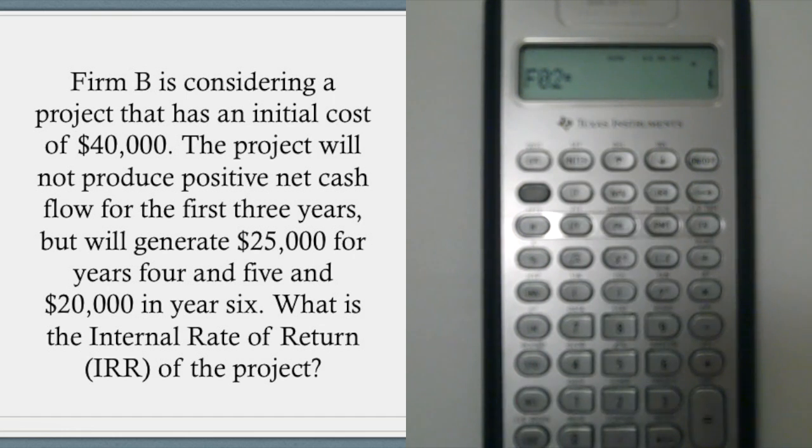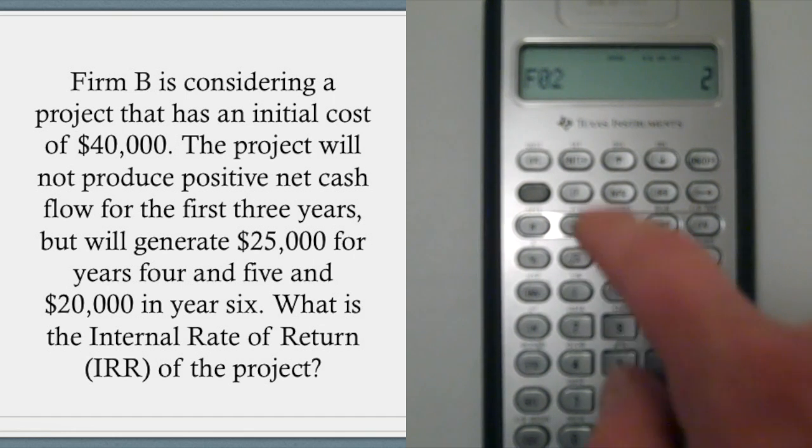Now F02 is the frequency of the cash flow we just entered. And because it's happening twice, once in year four, once in year five, we'll enter a two. Enter.